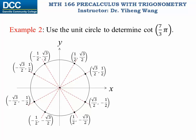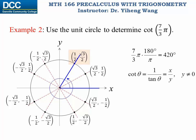Let's look at another example. We need to use the unit circle to determine cotangent of seven-thirds pi. If you are not familiar with radians, convert this angle to degrees first, which is 420 degrees — bigger than 360 degrees, so this angle is more than one revolution. We draw it in standard position, and the terminal side intercepts the unit circle at coordinates x equals one-half and y equals square root of three over two. Cotangent theta is x over y, so cotangent of seven-thirds pi equals square root of three over three.